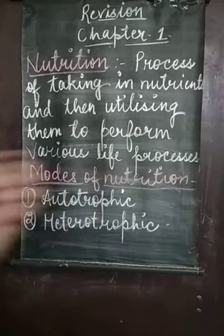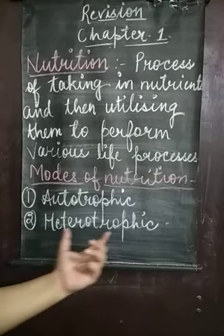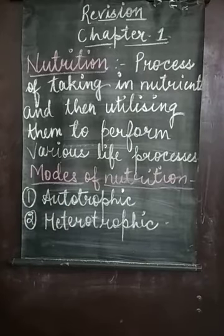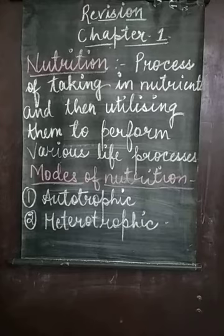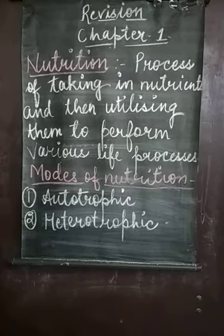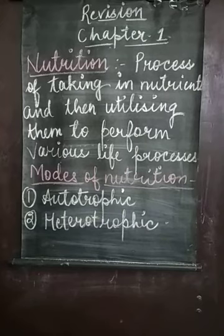The first mode is autotrophic mode of nutrition and the second is heterotrophic mode of nutrition. Green plants are known as autotrophs because they prepare their own food with the help of carbon dioxide, water, and chlorophyll in the presence of sunlight. Since they prepare their own food, that mode is known as autotrophic mode of nutrition. Green plants are not dependent on other organisms for their food.